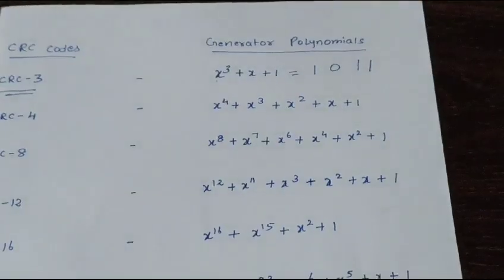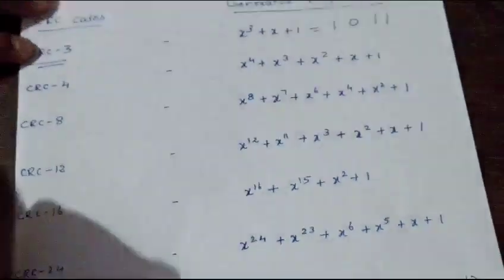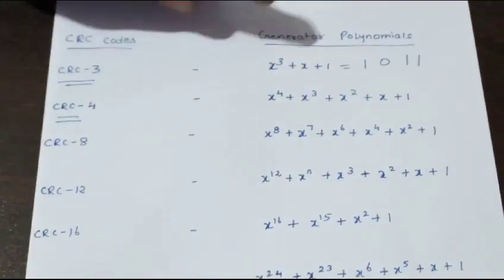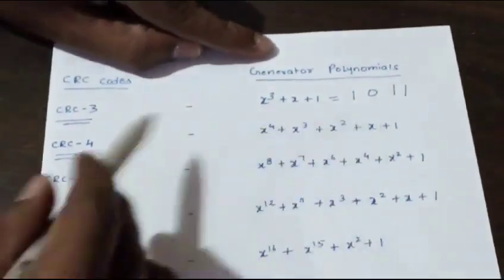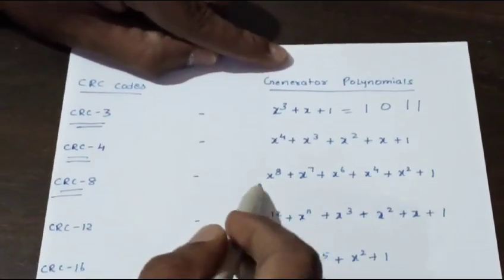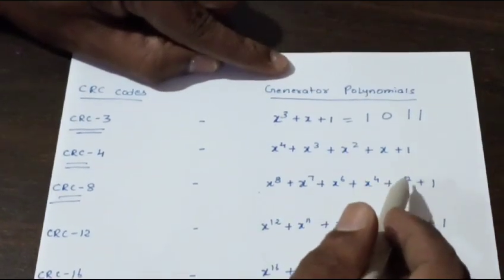Similarly, for CRC-4 it is x⁴+x³+x²+x+1. And for CRC-8 it is x⁸+x⁷+x⁶+x⁴+x²+x+1. For CRC-12, this is the standard polynomial.